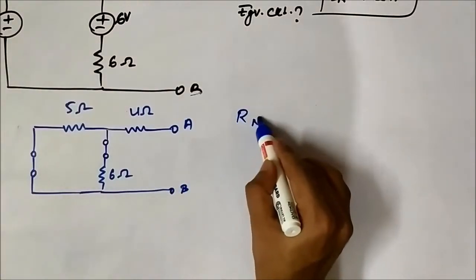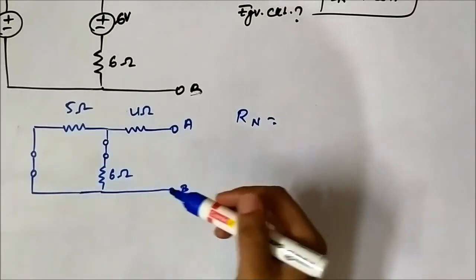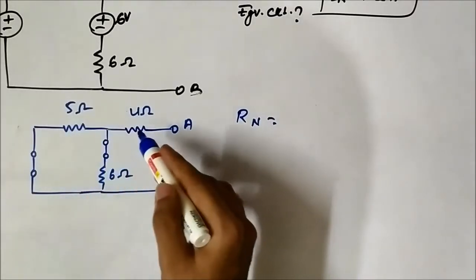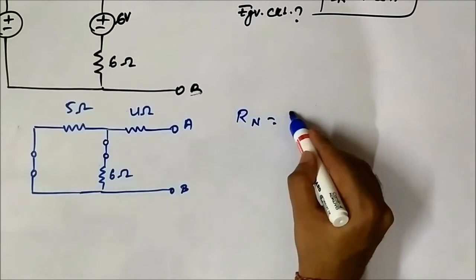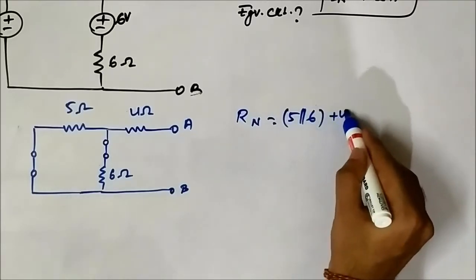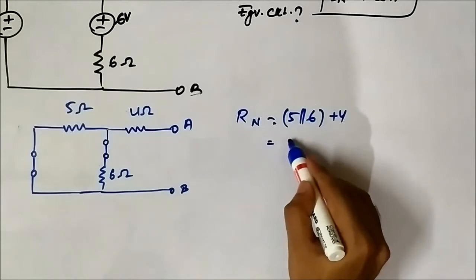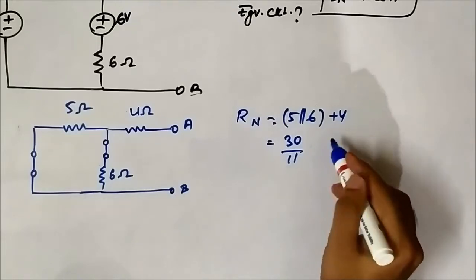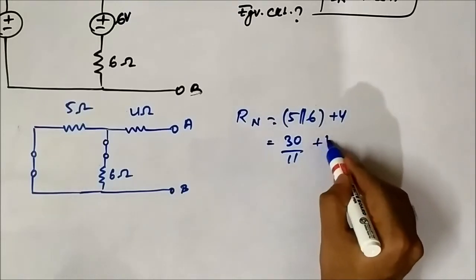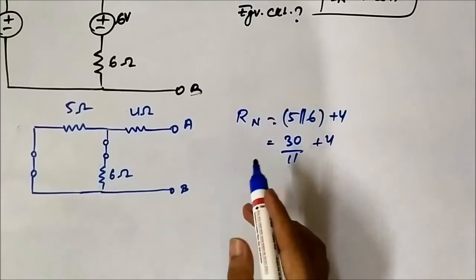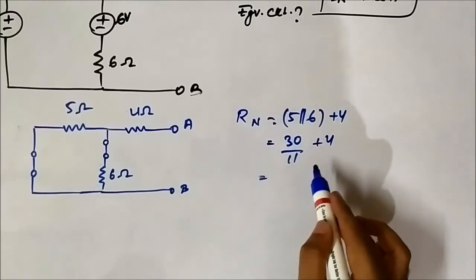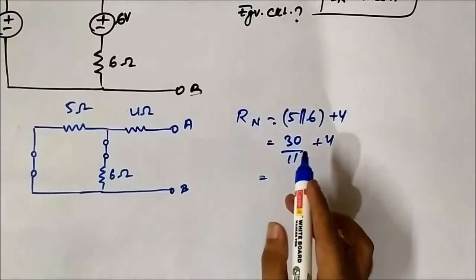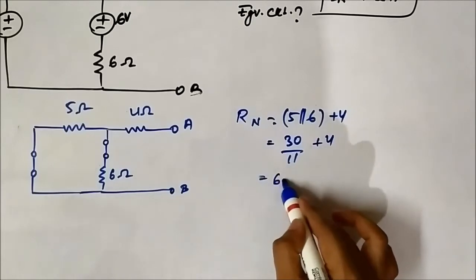Rn will be 6 and 5 are in parallel with respect to each other, the resultant is in series with 4. So it is 5 parallel 6 plus 4, which is 6 into 5 by 6 plus 5, that is 30 by 11 plus 4. Rn is coming as around 6.727 ohm.